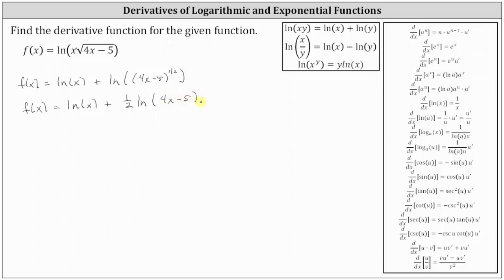Now we can find the derivative more easily using f of x in this form. f prime of x equals the derivative of natural log x, which is one divided by x, plus the derivative of one-half times natural log of the quantity four x minus five. This requires the chain rule where the inner function u is four x minus five, so the derivative equals one-half times one divided by the quantity four x minus five, times the derivative of four x minus five, which is four.